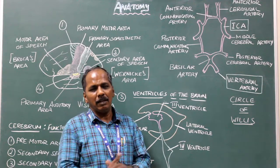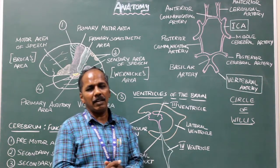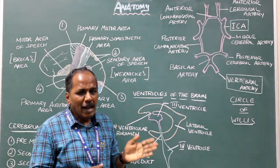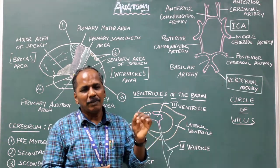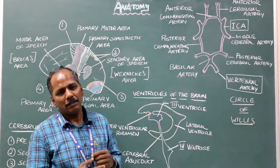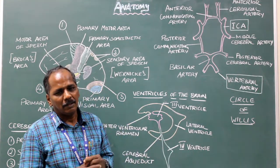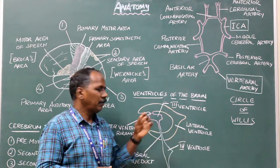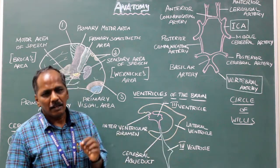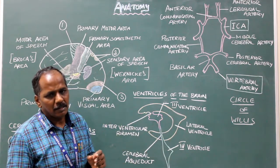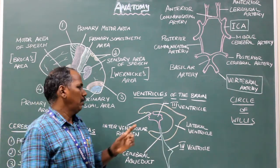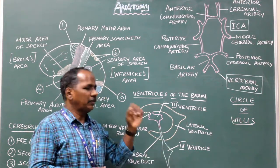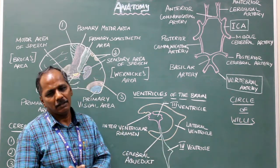Ventricles of the brain. What are the ventricles? They are the cavities present in the brain. There are a pair of lateral ventricles, the third ventricle and fourth ventricle.